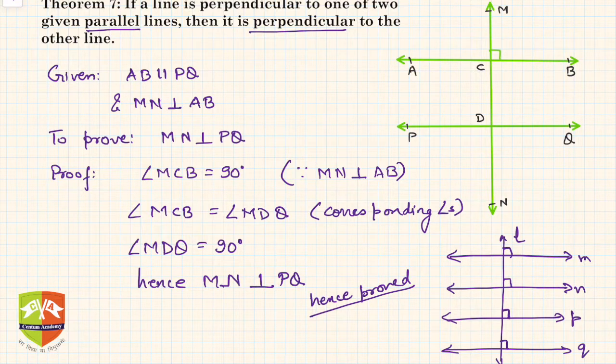So if the line is perpendicular to one line, or if this transversal is perpendicular to one of the parallel lines, it will be perpendicular to all the parallel lines. Okay. So that's about the proof.